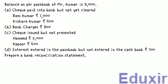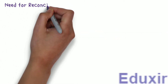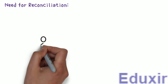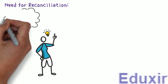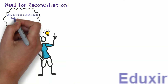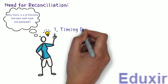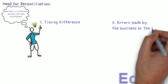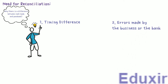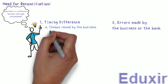Before we proceed with the analysis of these particulars, let us first recap about why there is a need for reconciliation. By preparing the bank reconciliation statement, we get an idea about why there is a difference between the cashbook and the passbook. The difference could be due to timing difference in recording the transaction, or errors made by the business or the bank. One reason is checks issued by the business but not yet presented for payment.